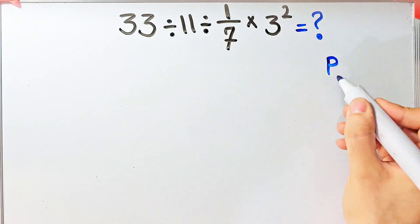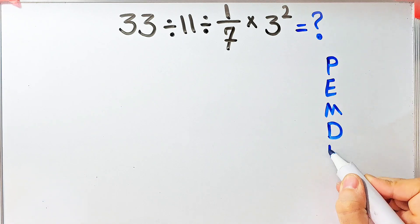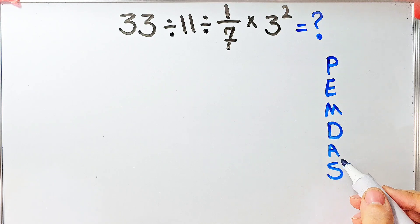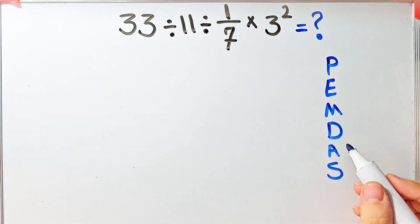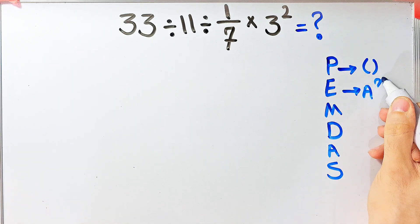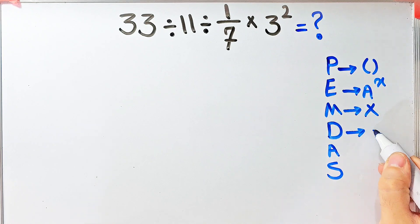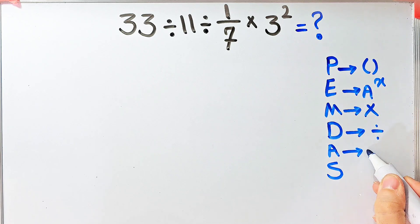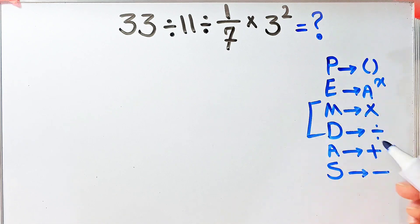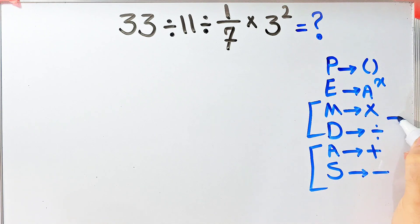To solve this question we need to follow the order of operations, which is PEMDAS. PEMDAS shows the priority of the mathematical operations, and if you don't pay attention to this rule you get the wrong answer. P stands for parentheses, E for exponent, M for multiplication, D for division, A for addition, and S for subtraction. Multiplication and division have the same level of priority, and so do addition and subtraction.